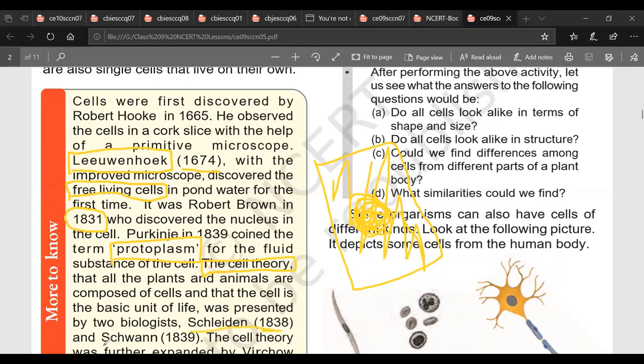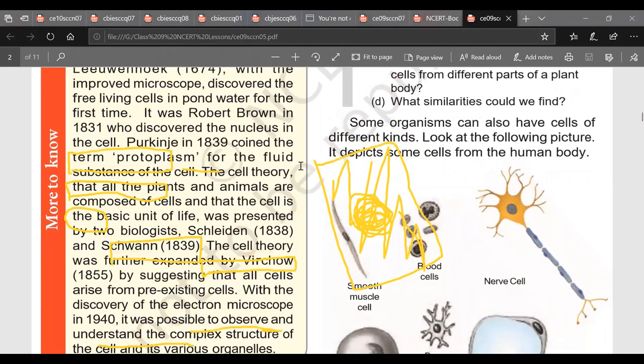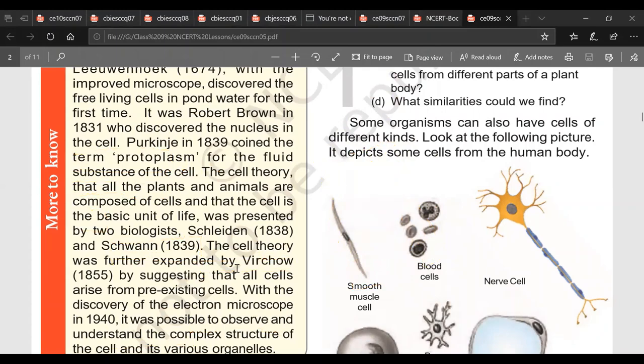Cell theory was expanded by another scientist known as Virchow. Virchow in 1855 gave a statement. He gave a statement omnis cellularis e cellularis. Omnis cellularis e cellularis means all cells arise from pre-existing cells. We cannot create new cells in the laboratory. We can just manipulate a little bit. But we cannot create new cells. So all cells are formed by division of pre-existing cells.